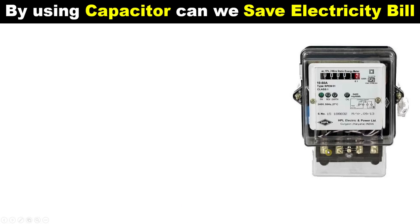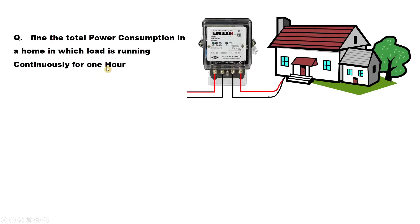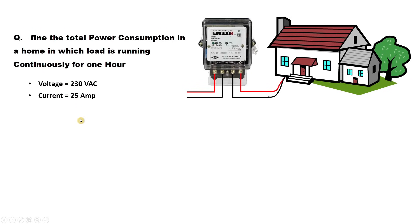The main question is: if we connect a capacitor to the energy meter's power supply, will the electricity bill be reduced? To understand this, we will do a calculation. The question is: find the total power consumption in a home where the load runs continuously for one hour, with a voltage of 230 volts, current of 25 amperes, and power factor of 0.6.